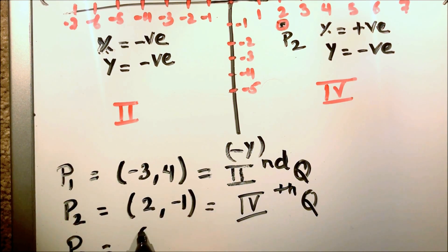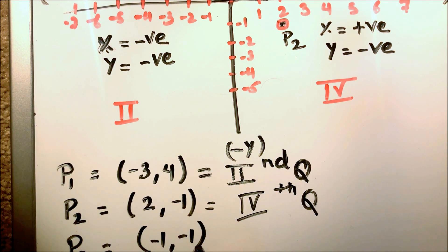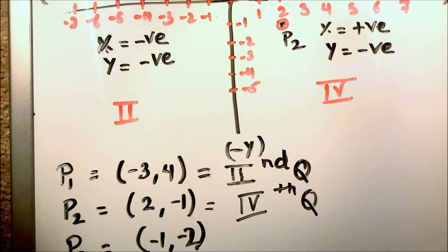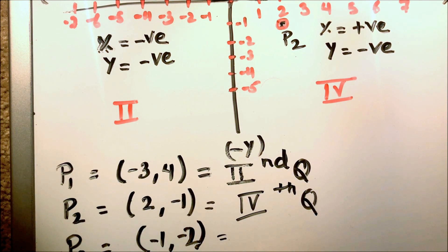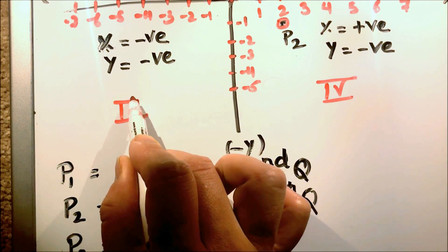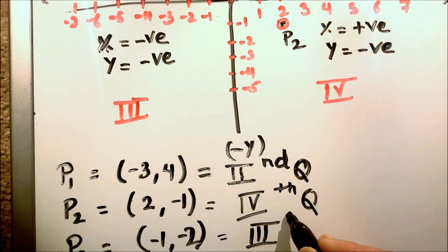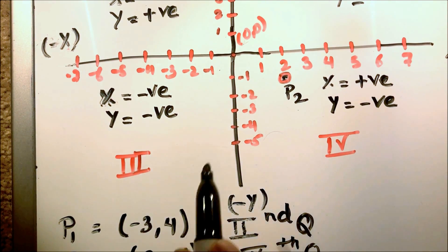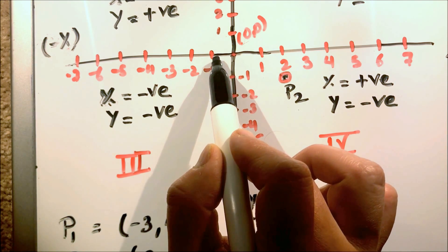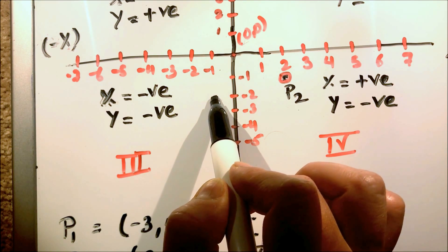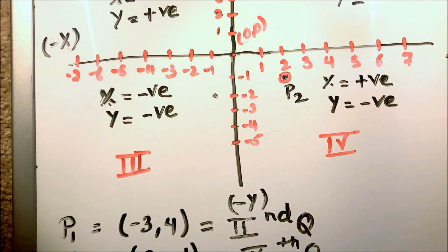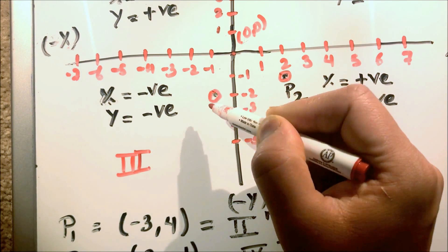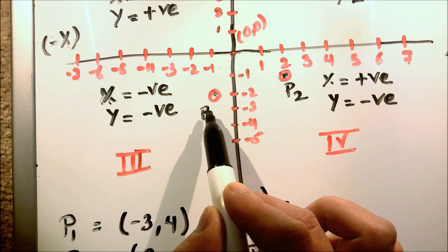Another example: if both values are negative — negative one and negative two — we can say that both the abscissa and ordinate are negative, meaning it is in the third quadrant. So we go one unit to the left on the x-axis and two markings down. This is our point P3, which comes in the third quadrant.